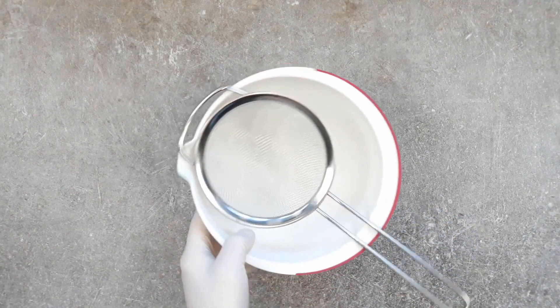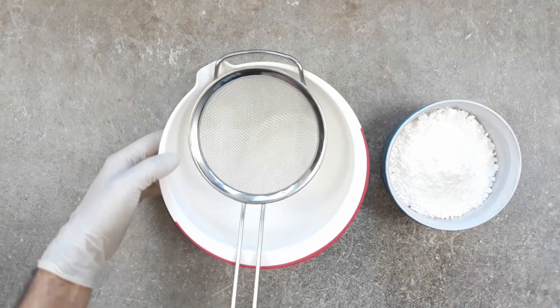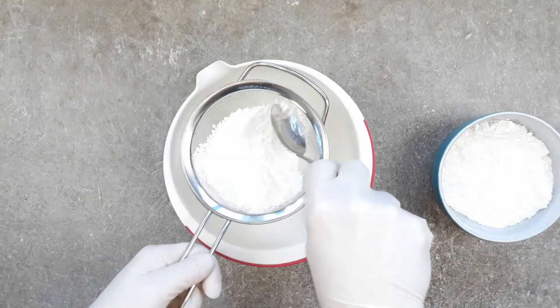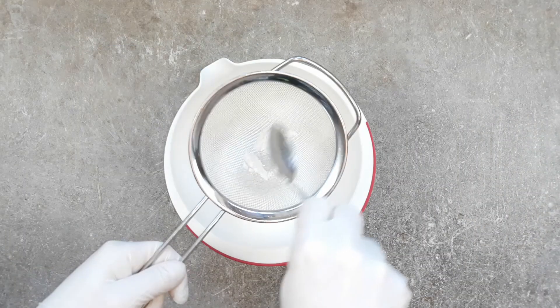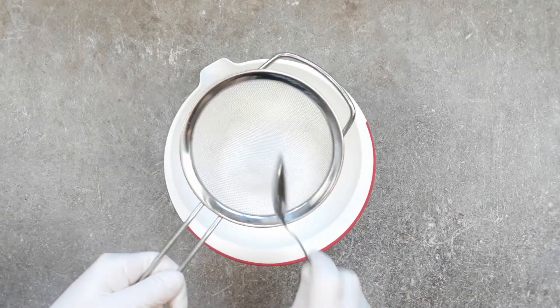So first off, we need to get 160 grams of icing sugar, powdered sugar, and we're going to give that a good sifting. We're making a soft royal icing here, I suppose, even though Germany became a republic in 1918 or 1919, depending on which definition of a republic you choose to use.